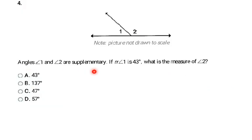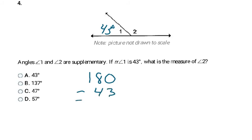Angles 1 and 2 are supplementary. If angle 1 is 43 degrees, what is the measure of angle 2? Supplementary means they add to 180 degrees. I subtract 43 from 180: 180 − 43 = 137 degrees for angle 2. My answer is B.